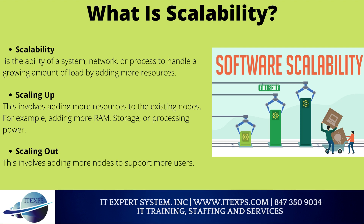What is scalability? Scalability is the ability of a system, network, or process to handle a growing amount of load by adding more resources. Scaling up involves adding more resources to the existing nodes — for example, adding more RAM, storage, or processing power. Scaling out involves adding more nodes to support more users. Any of these approaches can be used for scaling up or out an application.